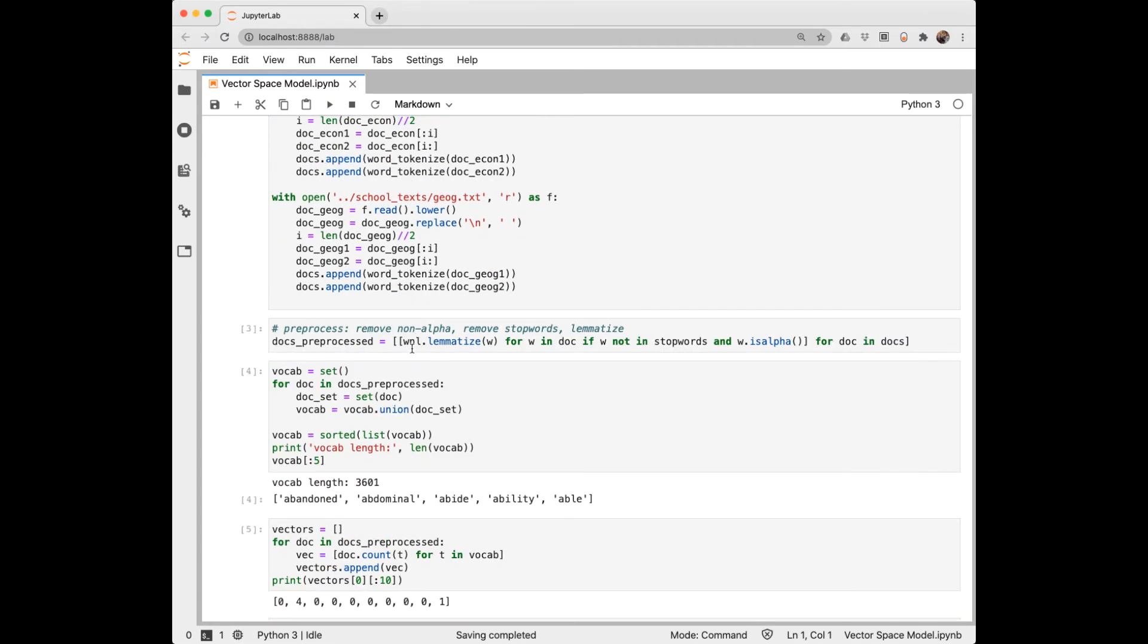I'm going to process each document by lemmatizing the words in a doc if it's not a stop word and if it is alpha. And so what I'll end up here is a list of docs, eight documents. And here I'm building the vocabulary for my corpus. I start off with an empty set. Then for each of the eight documents, I get a set of its words and join that with the set.